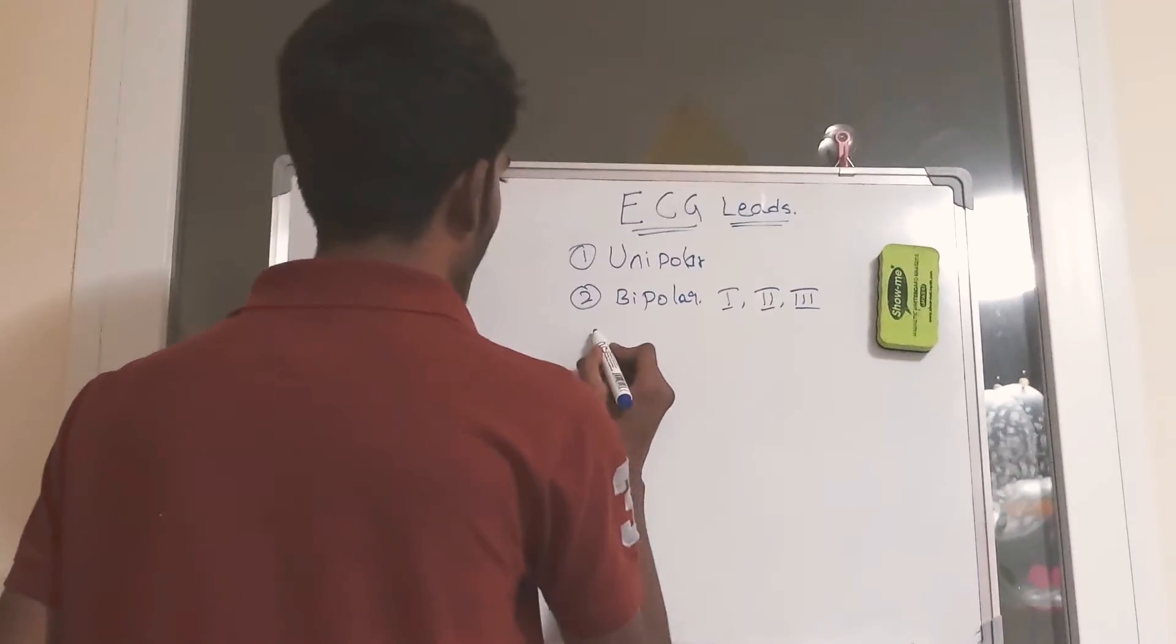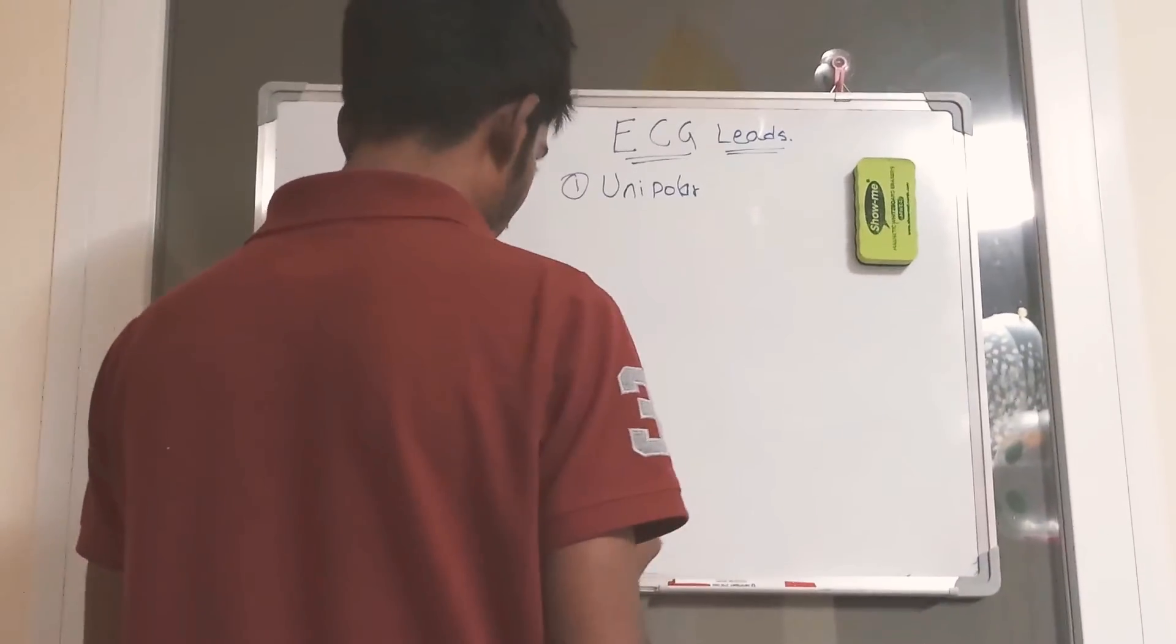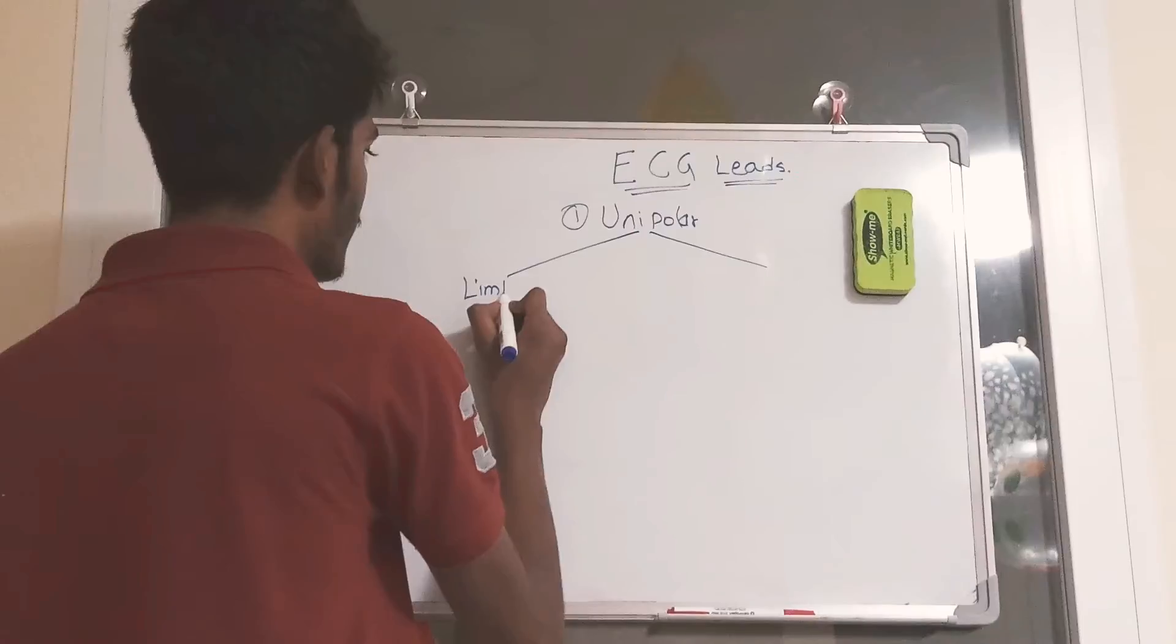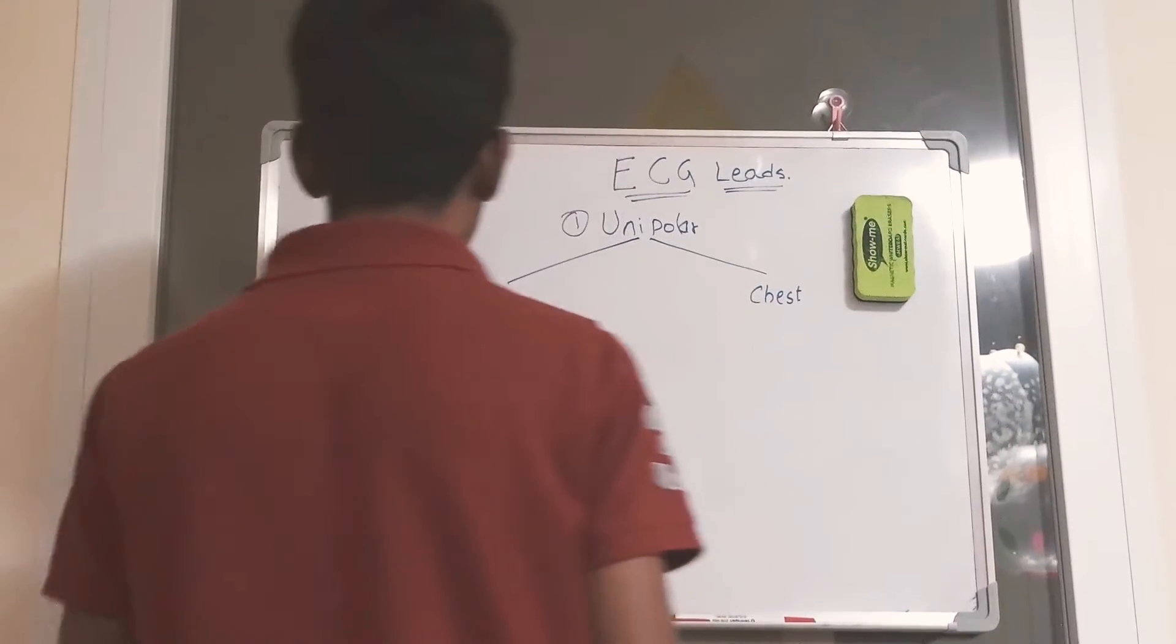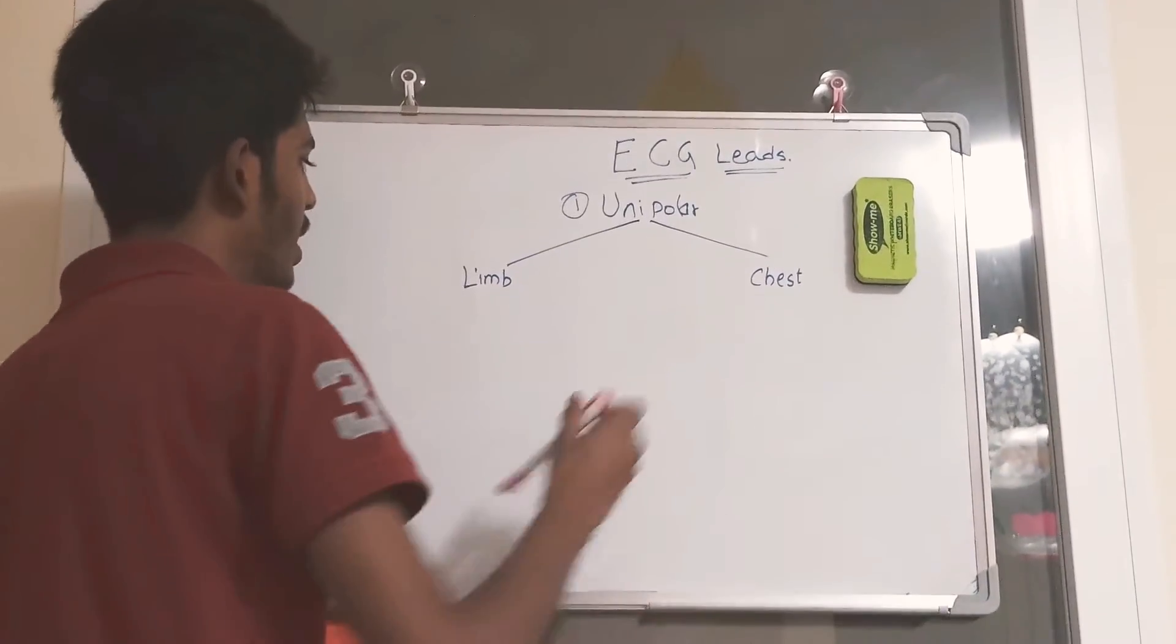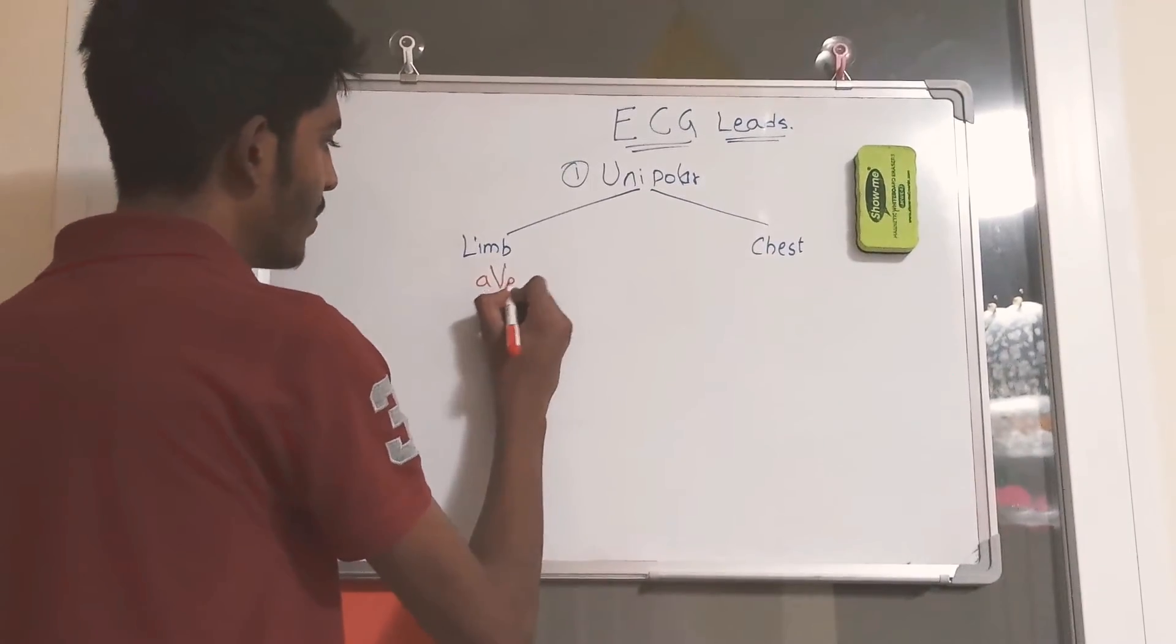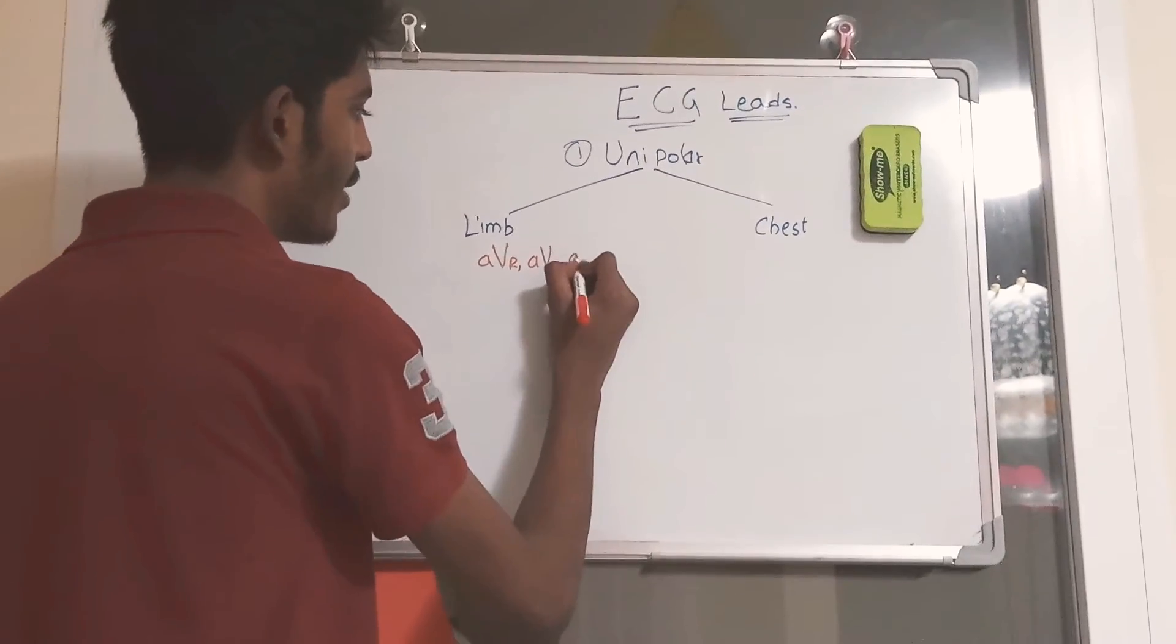Unipolar leads are classified into two classes: unipolar limb leads and unipolar chest leads. Unipolar limb leads are the ones which we don't connect really on the human body. That is, AVR, AVL, and AVF.